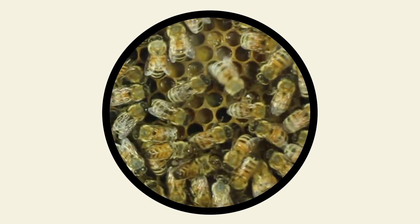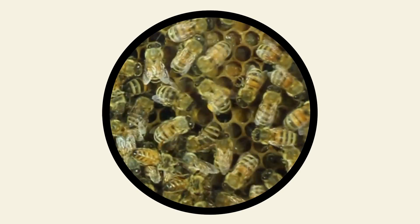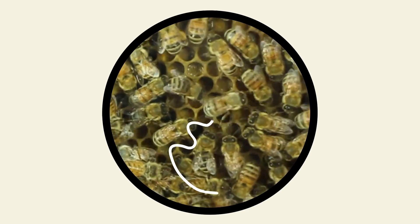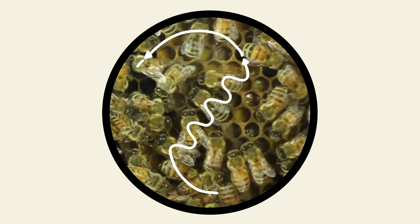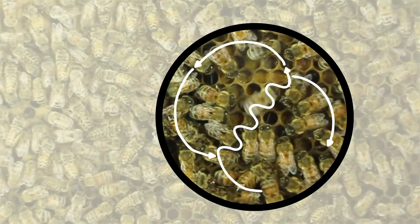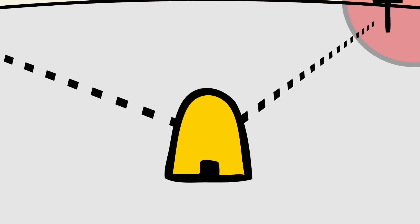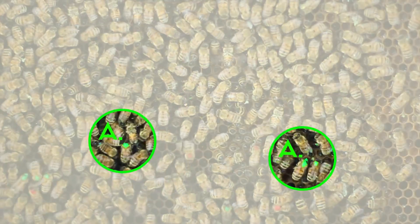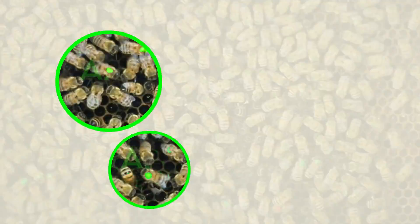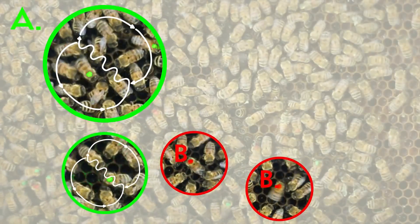Before von Frisch, other scientists had observed that returning bees tended to waggle about excitedly in a figure eight pattern before sharing the collected pollen and nectar with their hive mates. In this two-station experiment, von Frisch noticed that the bees returning from the same feeding source danced differently from bees that arrived from the other location.